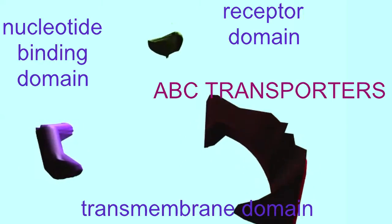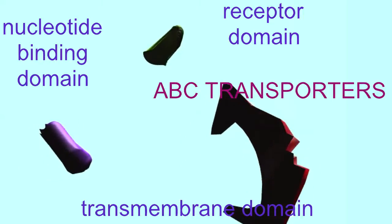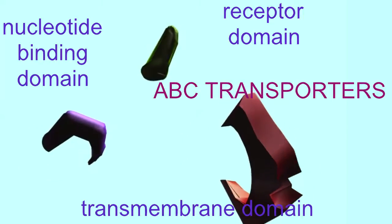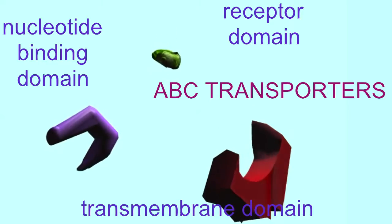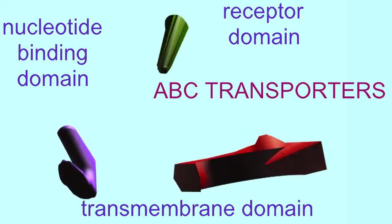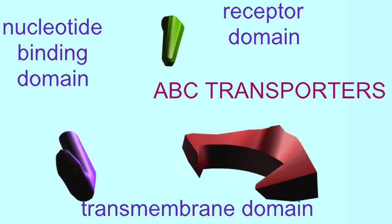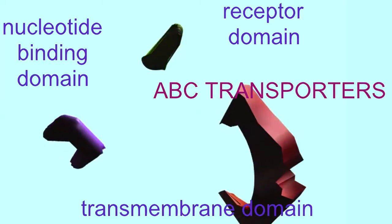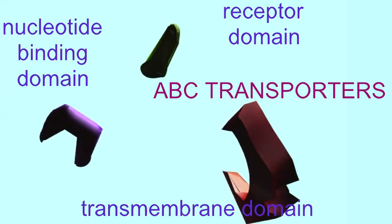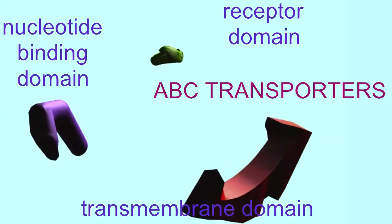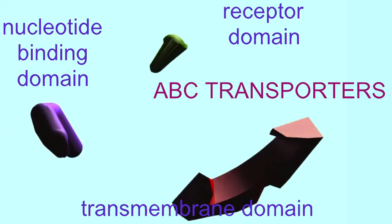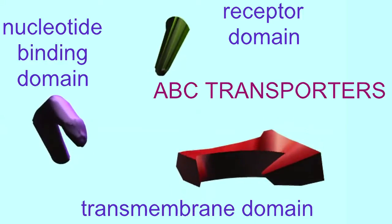The gene family members of the ABC transporter gene family typically possess three types of protein domains or specialized regions: the transmembrane region, which crosses a membrane; the nucleotide binding region, which binds ATP providing energy to pump something typically; and a receptor.